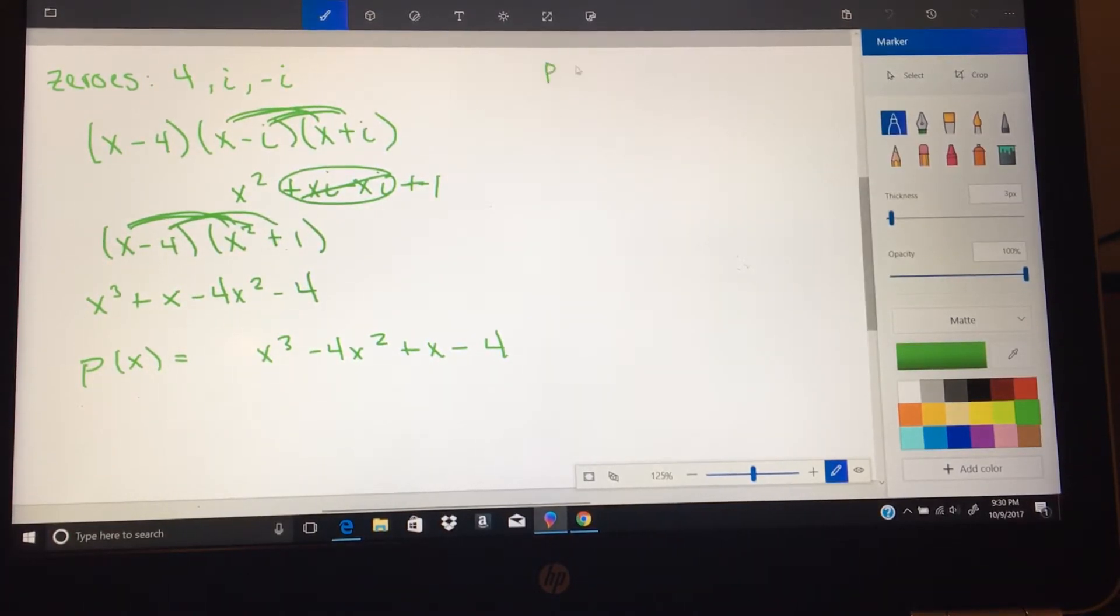Write that up here. p of 1 equals negative 6. What I'm going to do is take this function, put it in parentheses, and then I have this a term in front of it. So we need to find a. We're given everything we need to find a, because this is negative 6, and that's when we plug a 1 in for a function. So negative 6 equals a times 1 cubed minus 4 times 1 squared plus 1 minus 4.